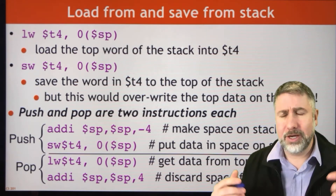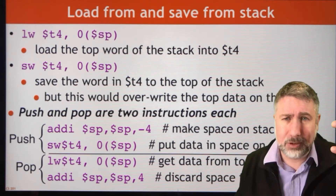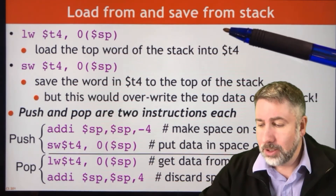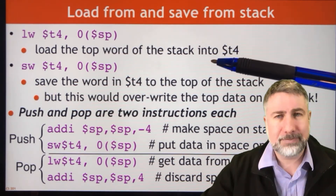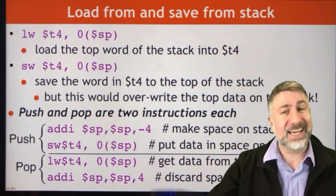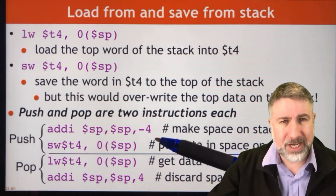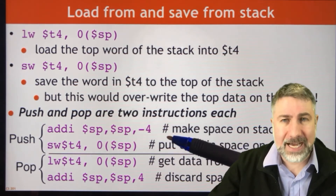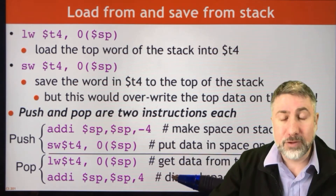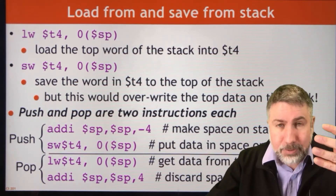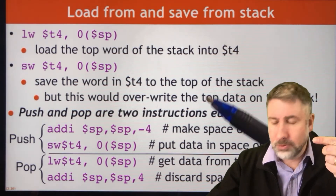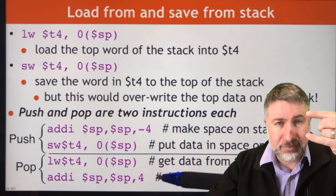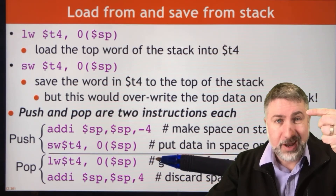We have to decide whether the stack pointer is going to point to the last thing we stored, or the next available slot. By convention in MIPS, we move the stack pointer before we store, and move the stack pointer after we load — which means the stack pointer is always pointing to the first full item on the stack, i.e., the last thing we pushed. So to put more information on the stack, first we make room by moving the stack pointer, and then we store that information there. To retrieve information from the stack, we retrieve the information first and then move the stack pointer.